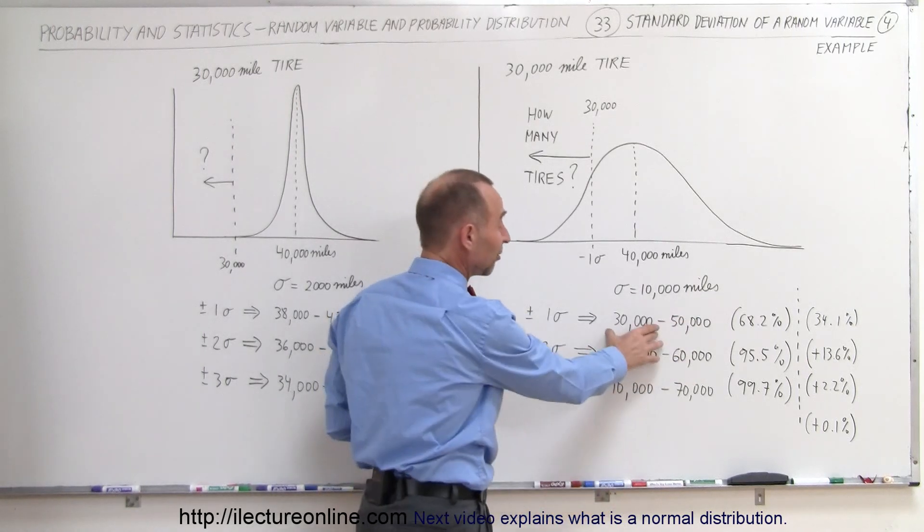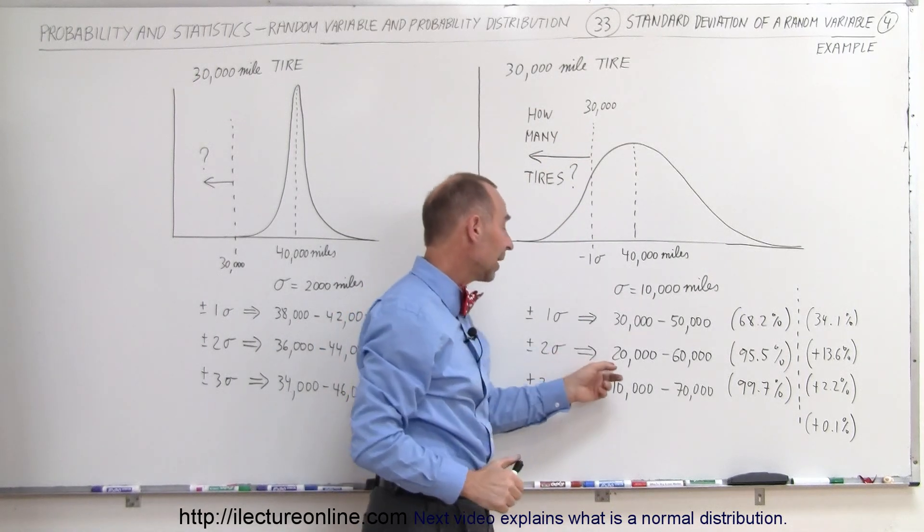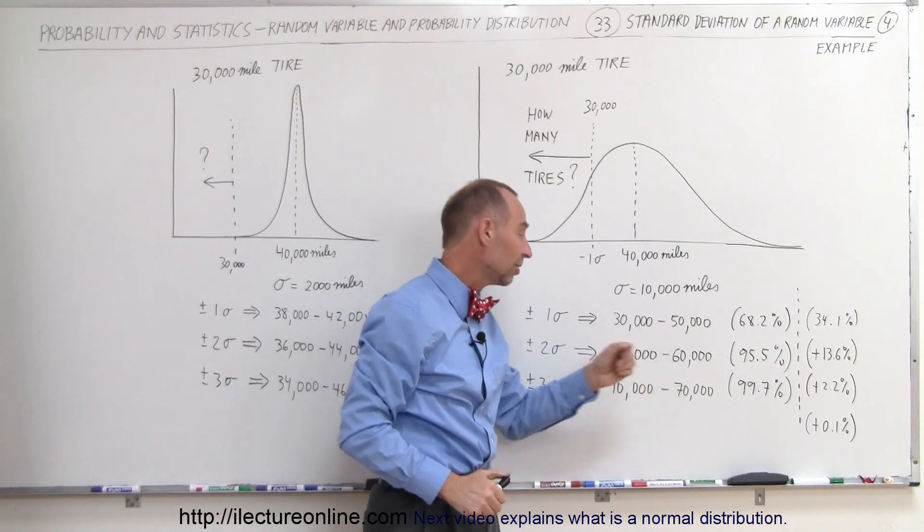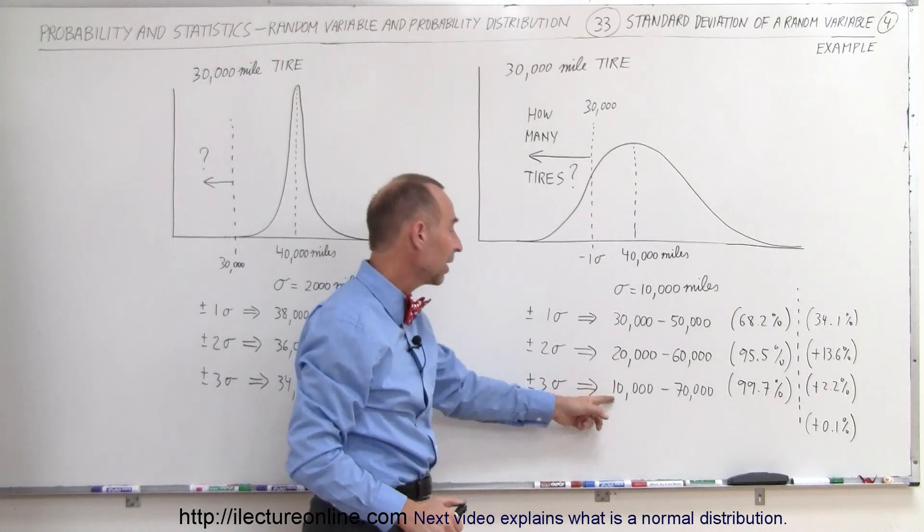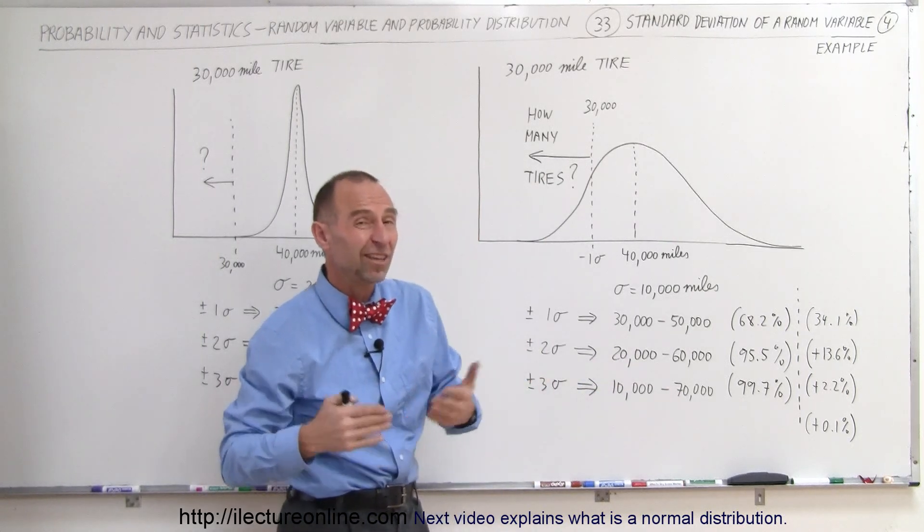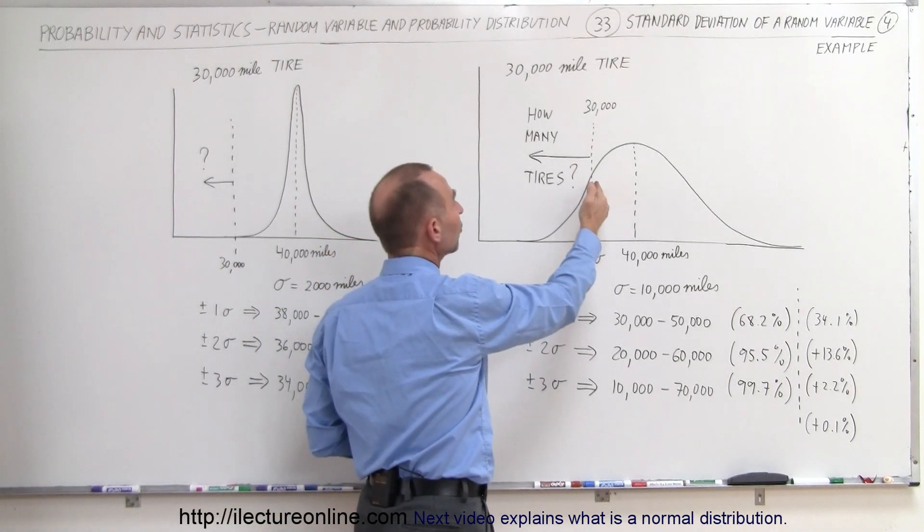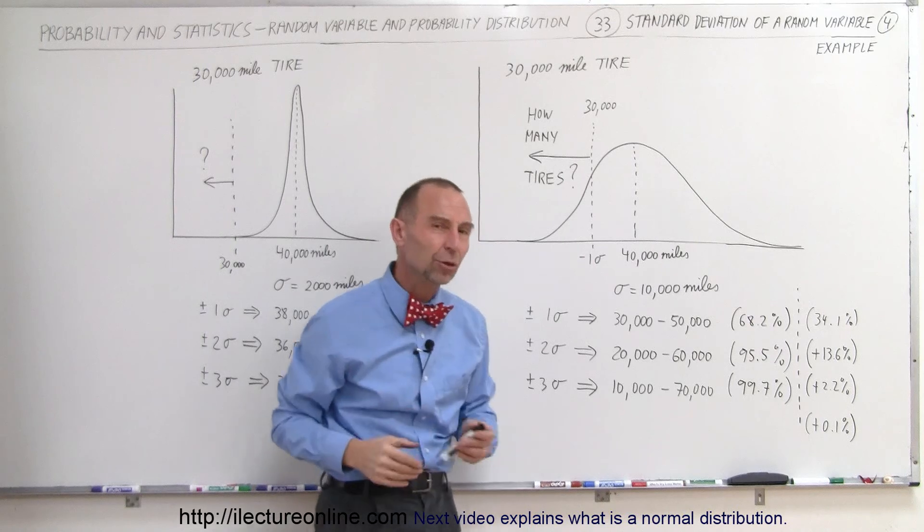50,000 miles is great, but 30,000 miles is getting up to the limit of what you're guaranteeing. Two sigma tires will only last from 20,000 to 60,000 and three sigma from 10,000 to 70,000. So the question is, how many of your tires, let's say you produce a million tires, how many will not last as much as 30,000 miles or less than 30,000 miles?